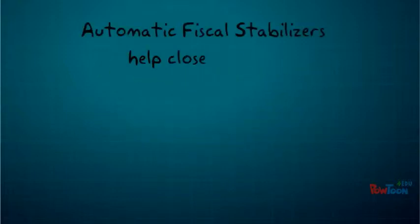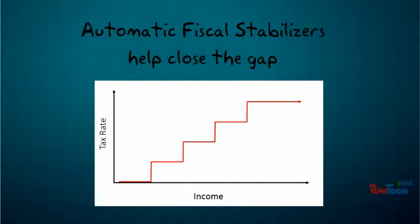Automatic fiscal stabilizers, such as the STEP tax system, will help to close the output gap.